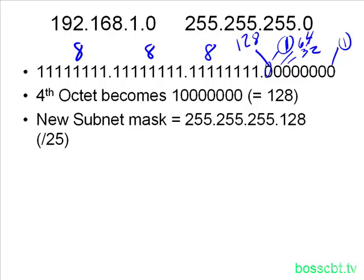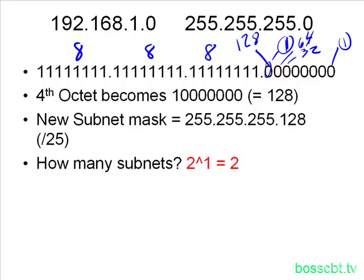How many subnets can we create by using this new subnet mask? When we apply this subnet mask to the Class C network we're chopping up, how many smaller groups do we create? The formula is 2 to the power of 1, so the answer is 2. That 1 comes from the number of subnet bits — in other words, how many bits we stole from the host portion. We only stole 1, so 2 to the power of 1 equals 2 subnets.